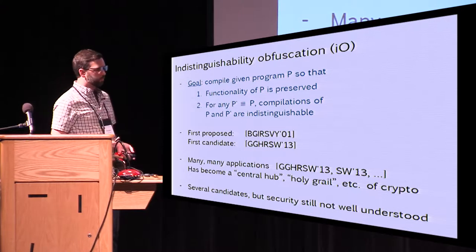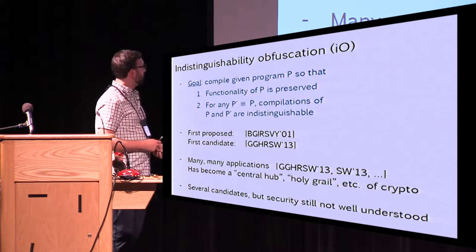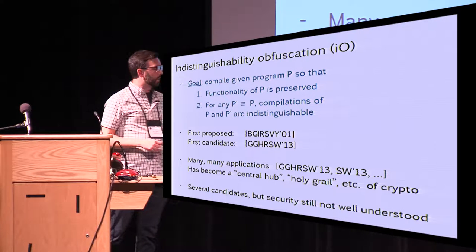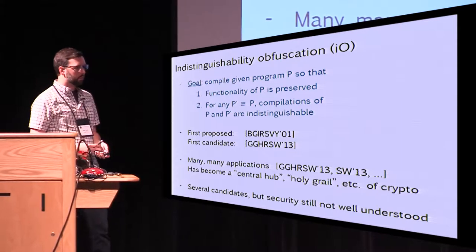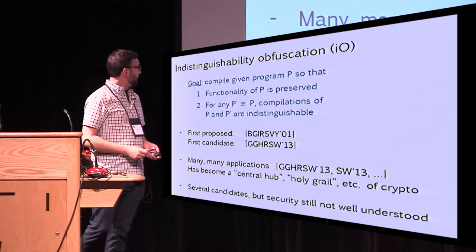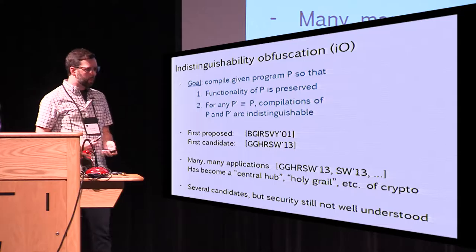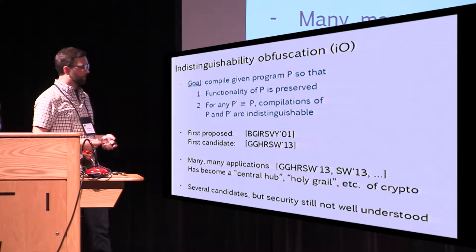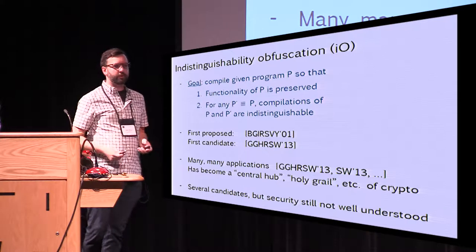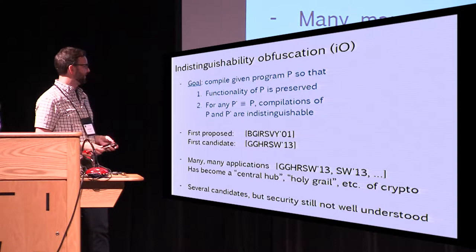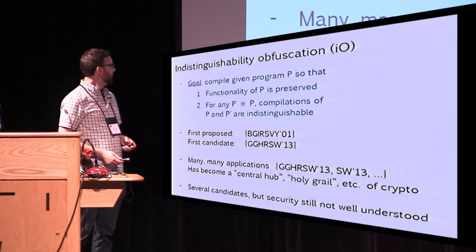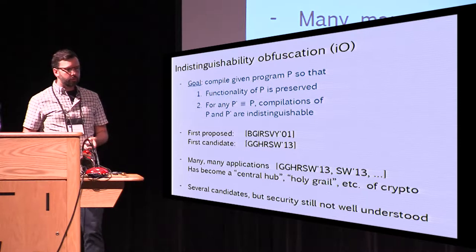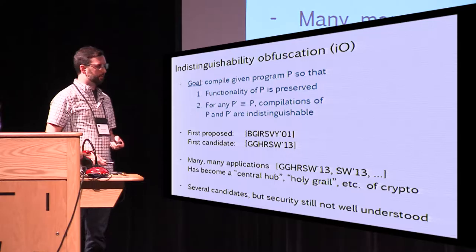This was first proposed by Barak et al. in 2001, but the first candidate didn't come until 12 years later in the work of Garg et al. At this point, we have many, many applications of IO, and it has become a central hub of crypto, a holy grail of crypto — a very important thing. We have many candidates for it, but the security of these is not very well understood right now.